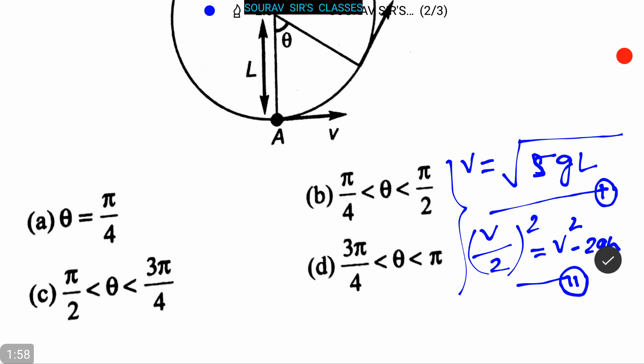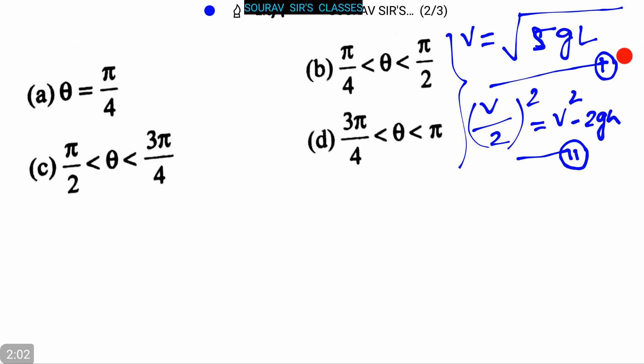And we can also write h is equal to l into 1 minus cos theta. Mark it as our third equation.